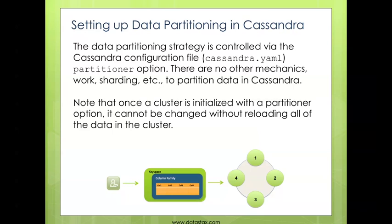Setting up data partitioning is very easy. All you do is assign the partitioner option in the main Cassandra configuration file, the Cassandra YAML file, and Cassandra takes care of everything else for you. There's really nothing else that you have to do. The only thing you do need to keep in mind is if you change the partitioning strategy, you will have to reload all of the data in your cluster.